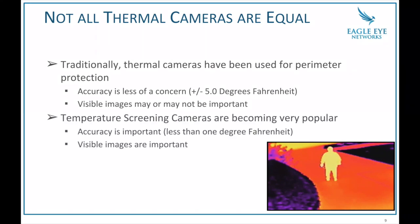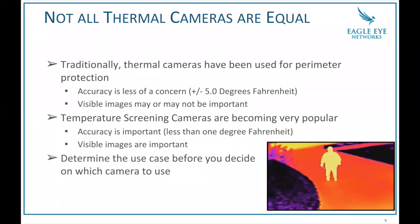When we're talking about temperature screening cameras, things are a little bit different. The thermal camera still might look the same on the outside, but accuracy is much more important — generally less than one degree Fahrenheit or half a degree Celsius. The visible image also becomes much more important, because if somebody has a higher temperature you want to know who it is, not just that somebody is there. So while we'll primarily talk about temperature screening cameras, just be aware there are at least two different classifications of thermal cameras — perimeter protection and temperature screening.